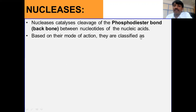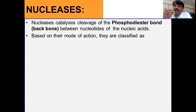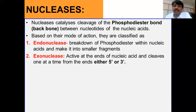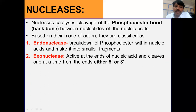Based on their mode of action, nucleases are classified into two categories. The first category is endonucleases and the second category is exonucleases. This classification is based on whether they act within the nucleic acid or at the ends of the nucleic acid.